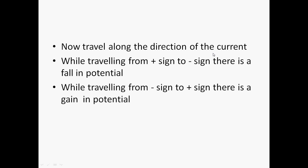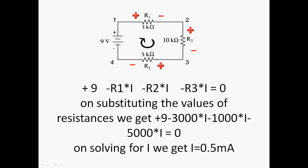Now we have to travel along the direction of the current. While travelling from positive sign to negative sign, there is a fall in potential. Whereas while travelling from negative sign to positive sign, there is a gain in potential. In this circuit, I am first moving from the negative terminal of the battery towards the positive terminal. Since I am travelling from negative to positive, there is a gain in potential. Hence, there is a plus 9 in the equation.